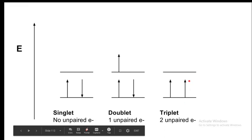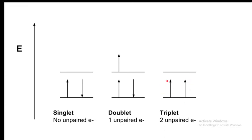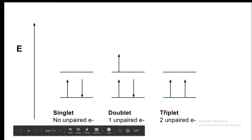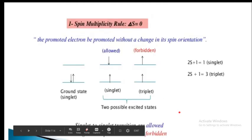Now let us discuss the case where two electrons are unpaired. Each has plus half spin, so the total spin is half plus half equals 1. Substituting in the formula 2S plus 1, we get 2 into 1 plus 1 equals 3. We call this the triplet state. This is the difference between singlet and triplet states.